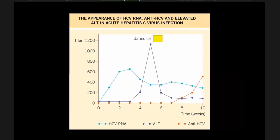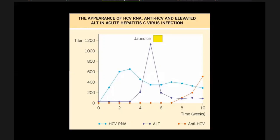Looking at a graph of hepatitis C: the HCV RNA level rises first, then as it falls, the transaminase starts to rise and the patient might get some jaundice. Antibodies appear much later. So if you rely on antibodies to diagnose hepatitis C, either the patient has already recovered or it's too early. Basically, depending on the antibody for hepatitis C is not very reliable. If you really suspect hepatitis C, you must do the RNA by PCR.